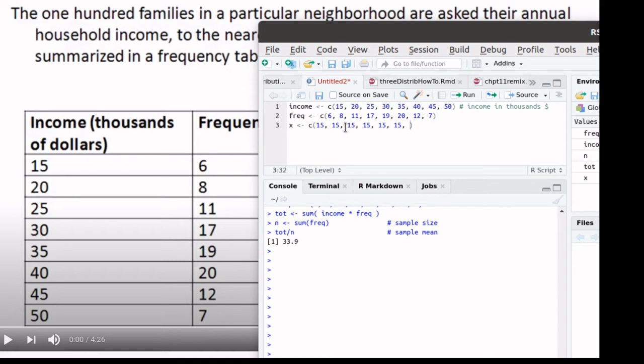So we could recreate this data set because we know that there are six that earned $15,000 and then there are eight that earned $20,000. So I could write in $20,000 eight times. Oh man, that would be a relatively long vector. But if I had that vector, then I could just say, let's find the mean of that vector.